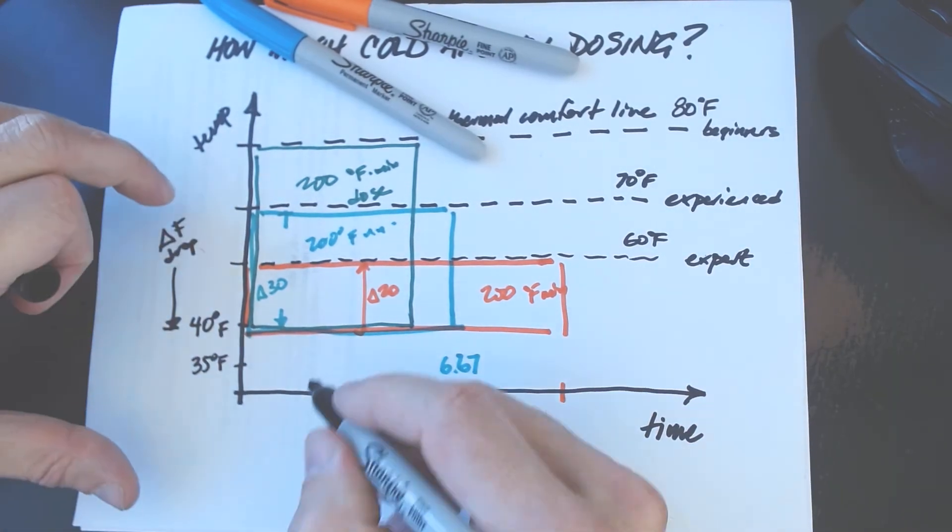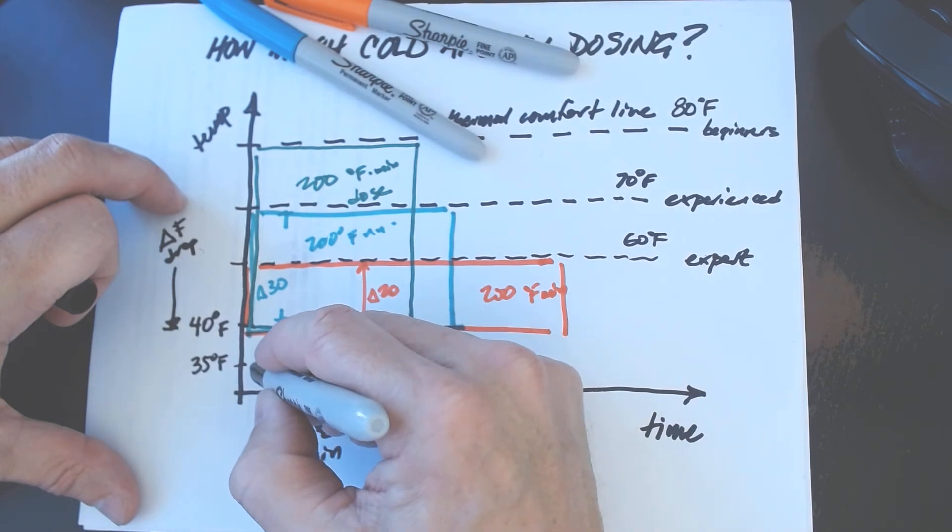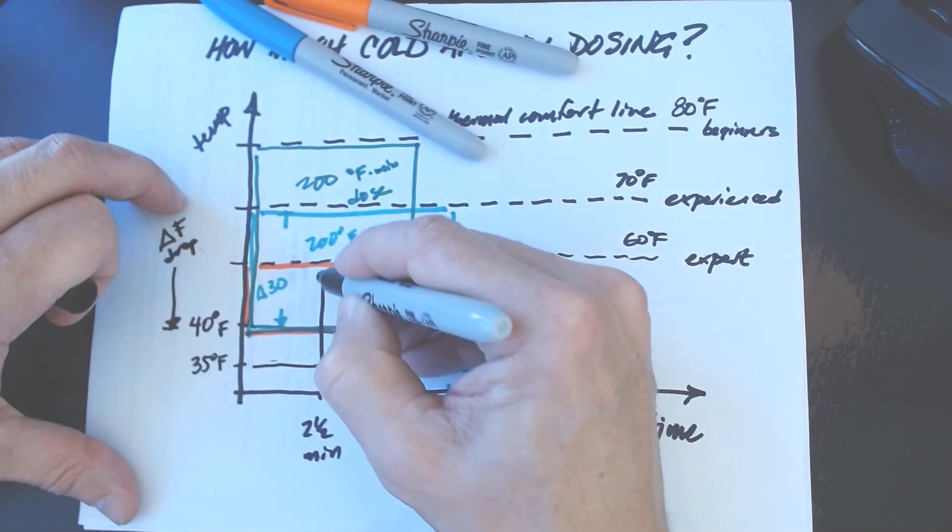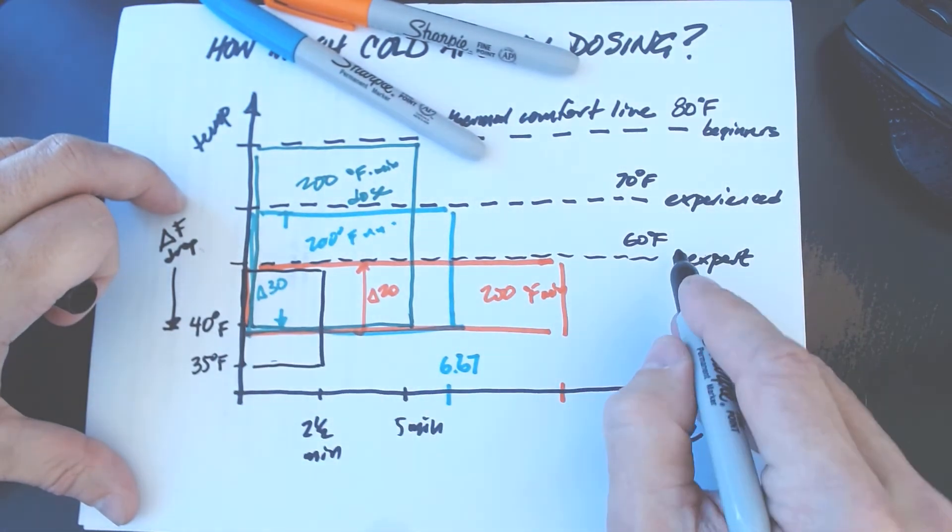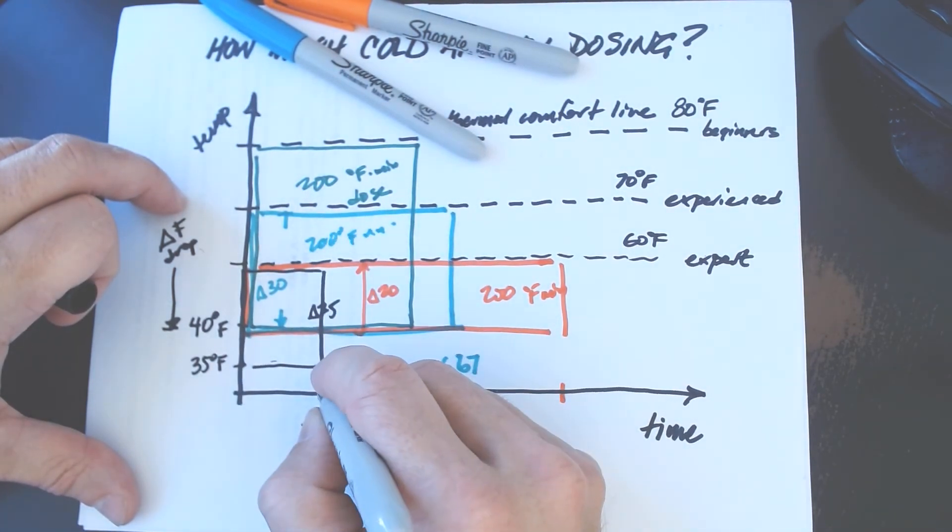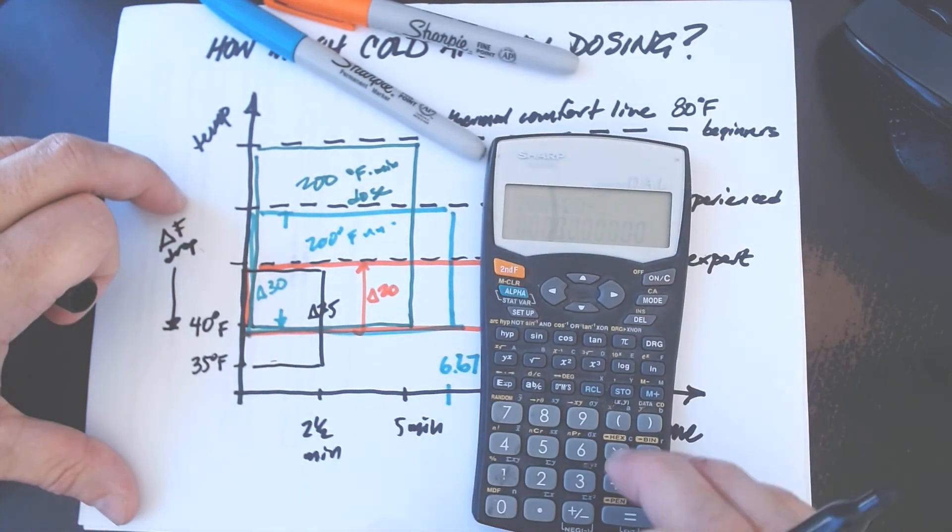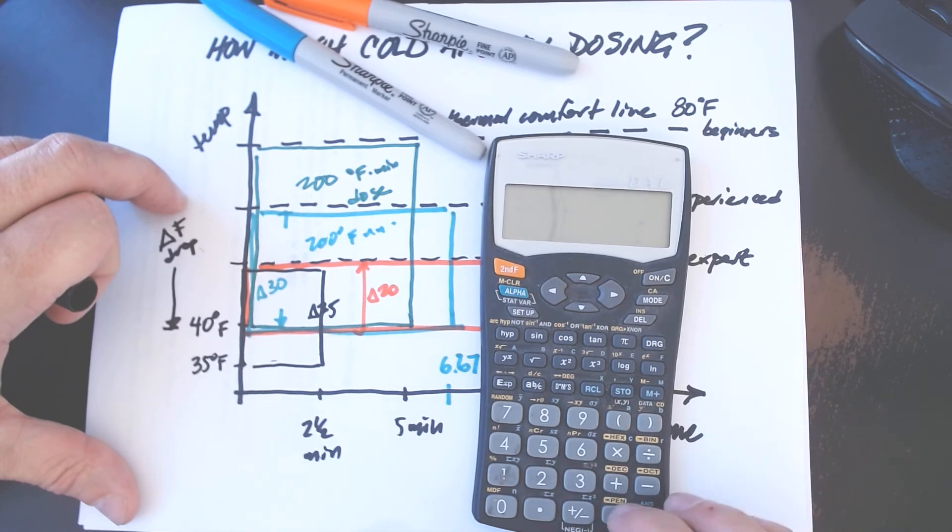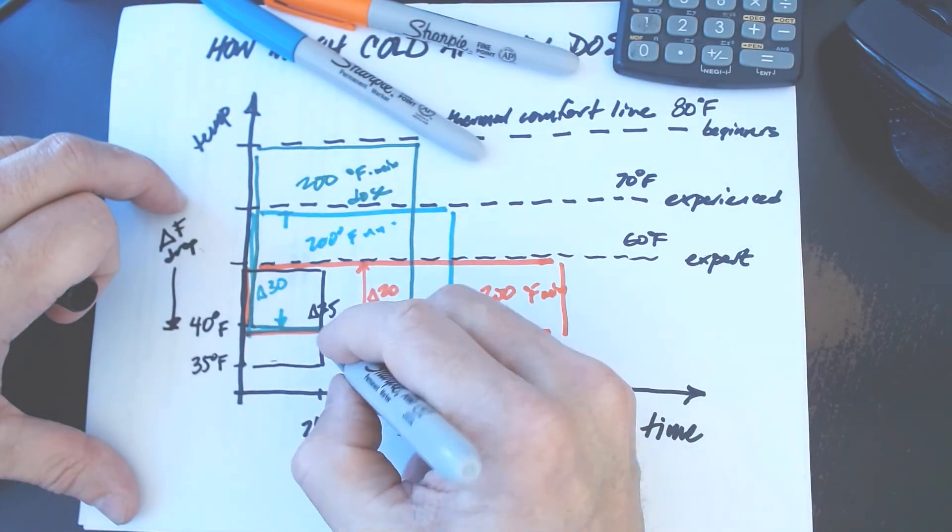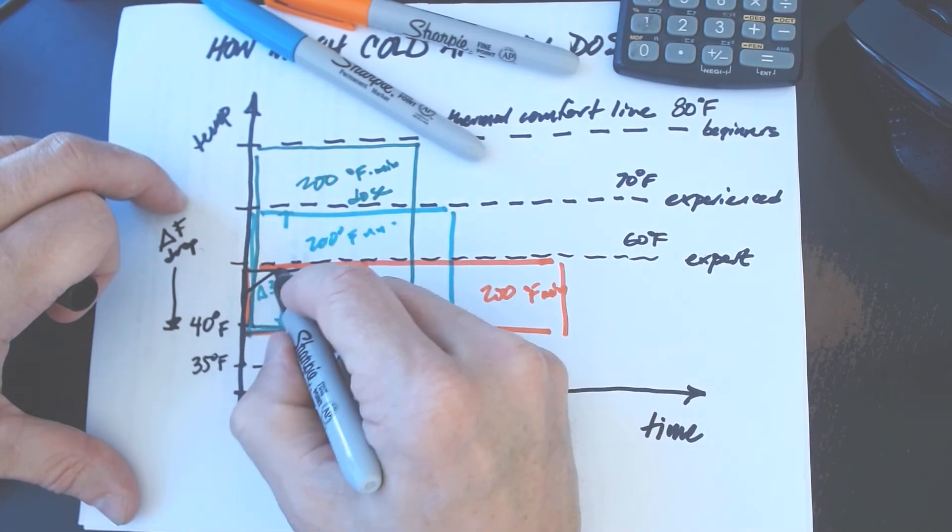Typically I'm in this during the winter anyway this two and a half minute mark. Maybe it's a little bit more on some mornings but mostly my dose looks like this. From 60 down to 35 is a delta of 25. I'm 25 degrees below my comfort line. I stay in my forge for about two and a half minutes every morning these days. 2.5 times 25 and you're going to come up with I'm getting 62.5 degree minutes of dose.